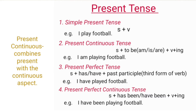Present continuous tense combines present with the continuous aspect. Its structure is Subject plus verb to be — that is 'am', 'is', or 'are' — plus verb plus -ing. And example is 'I am playing football.'